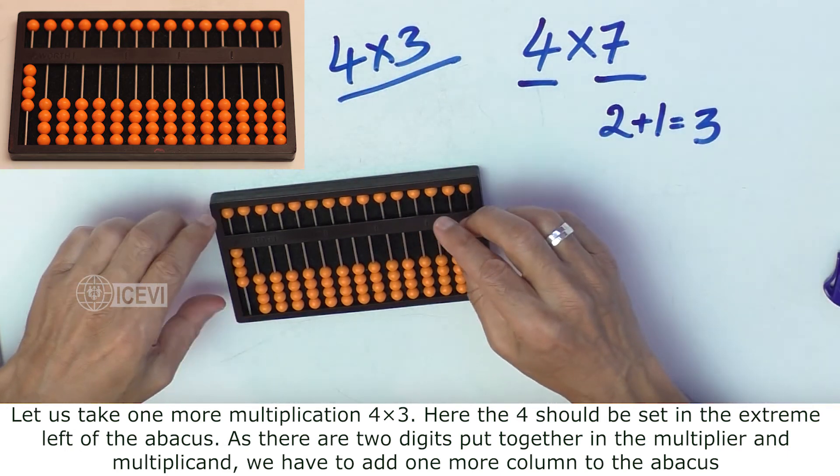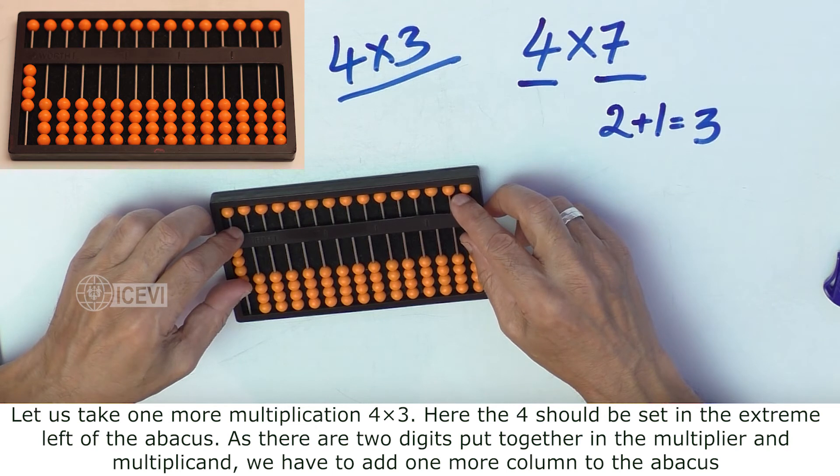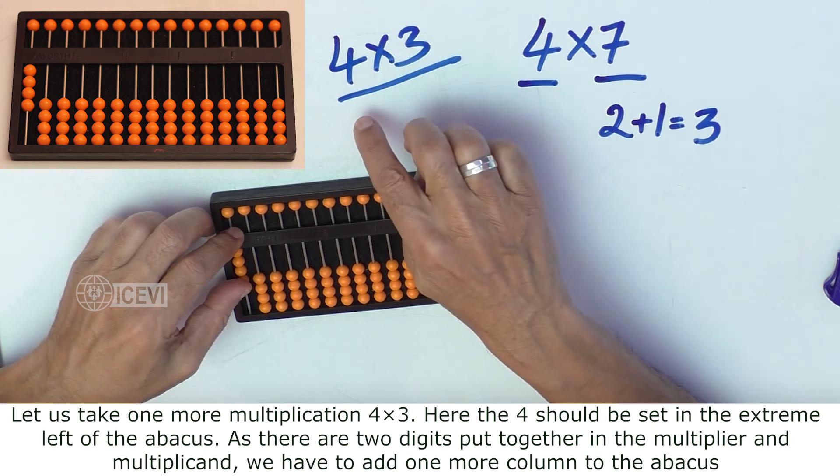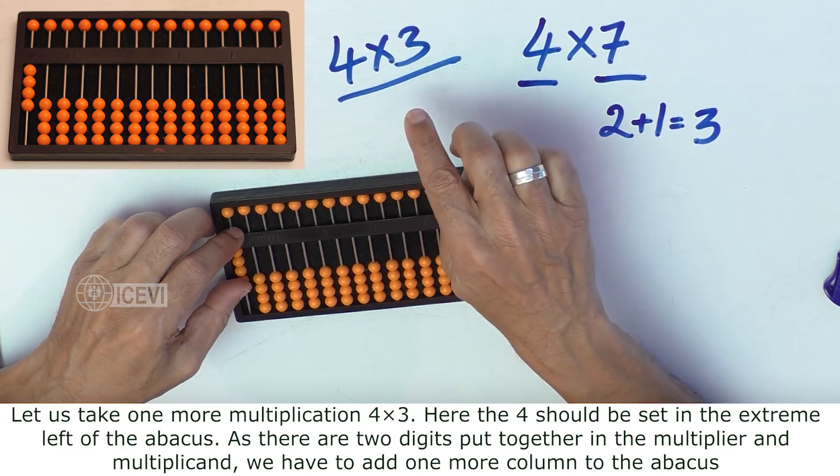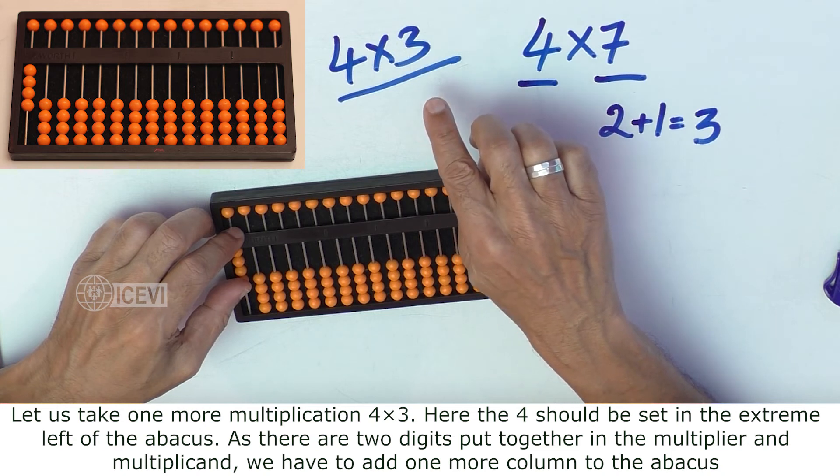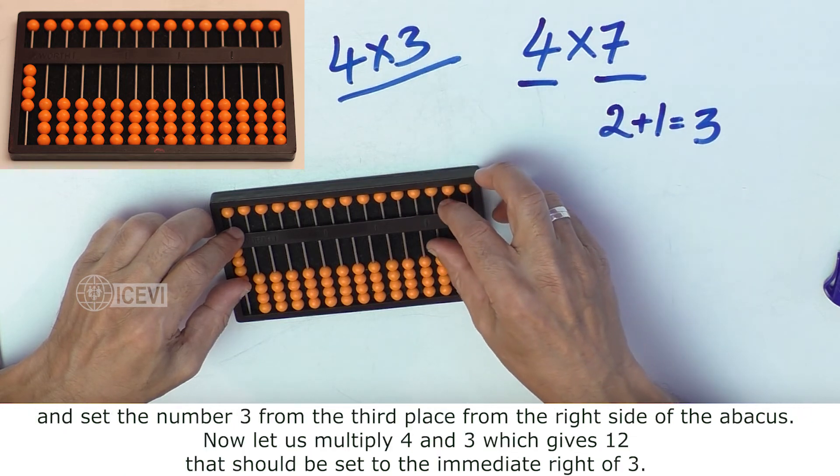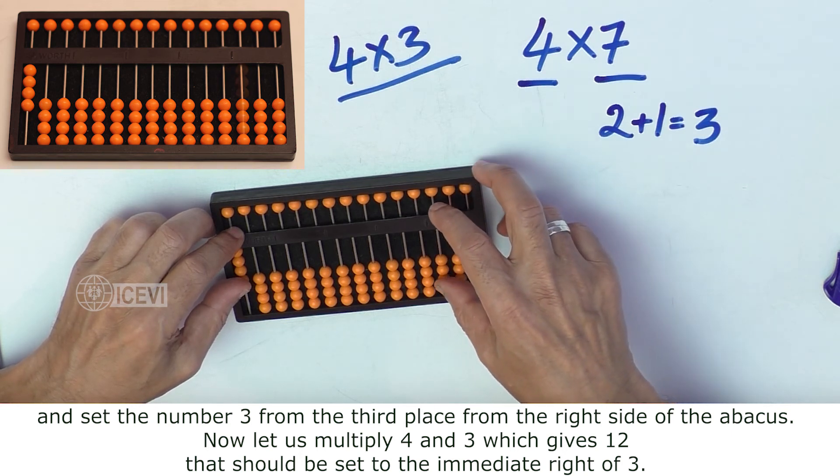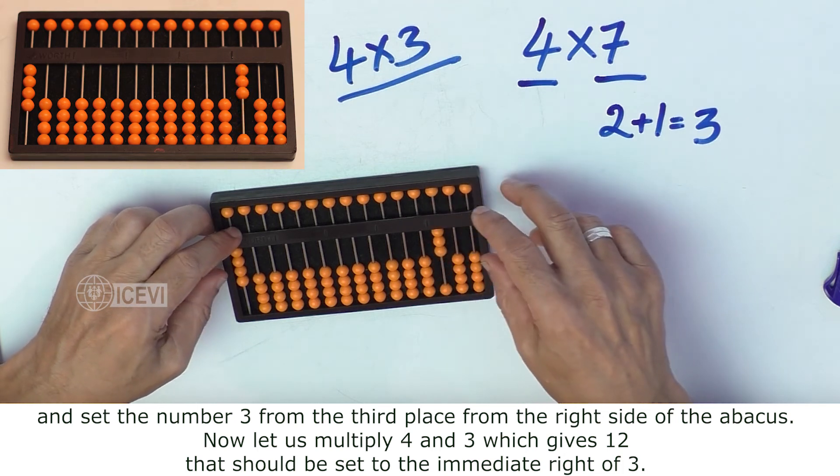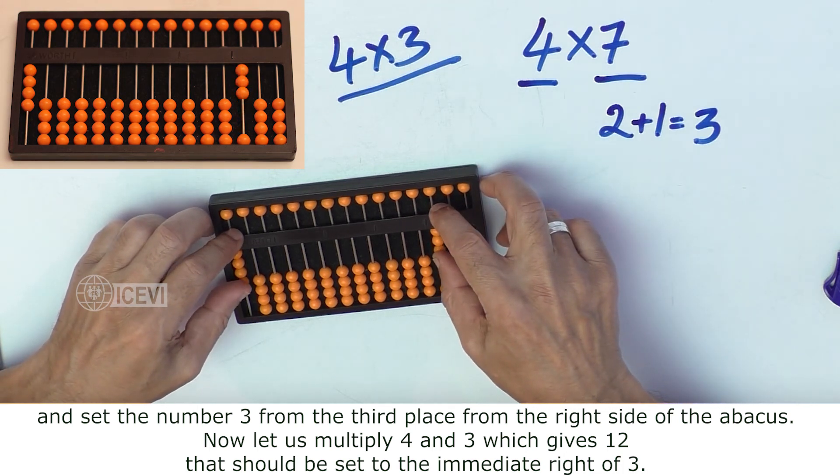Here, 4 should be set in the extreme left of the abacus. As there are 2 digits put together in the multiplier and multiplicand, we have to add one more column to the abacus and set the number 3 from the third place from the right side of the abacus. That is, number 3, which is the multiplicand, is set in the hundreds column.